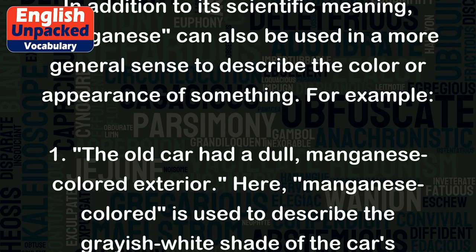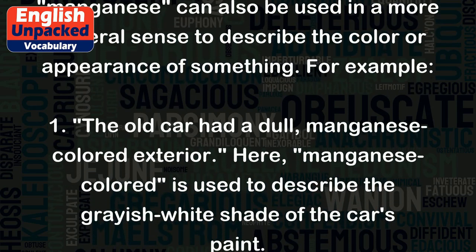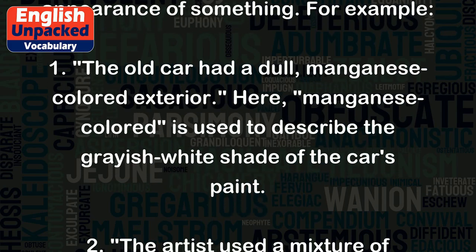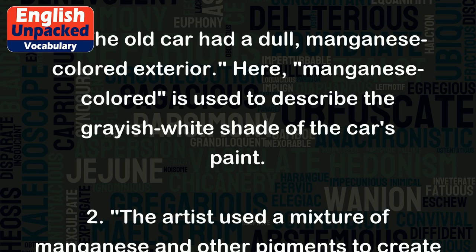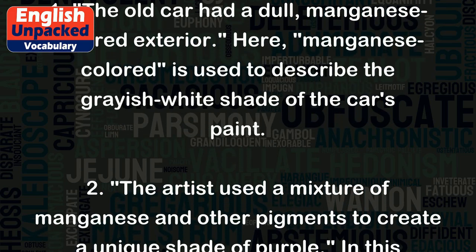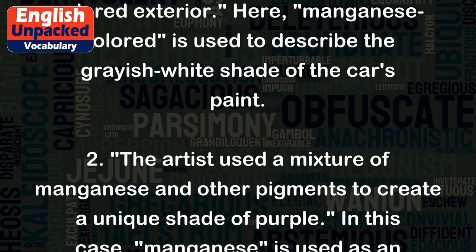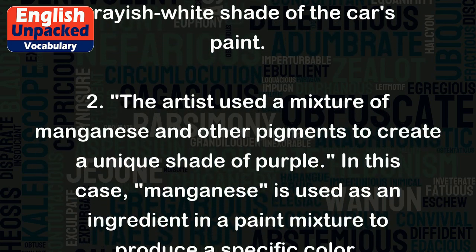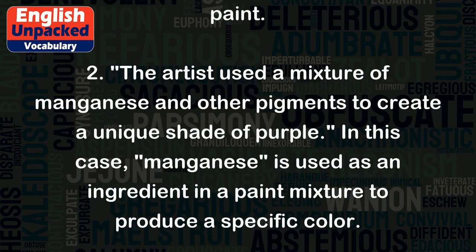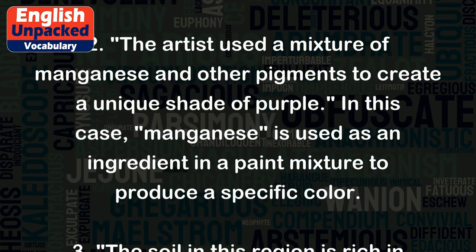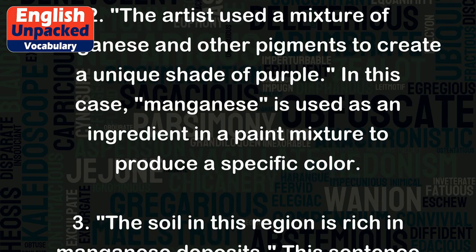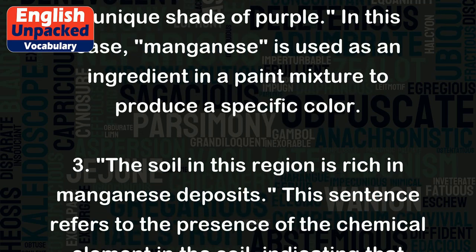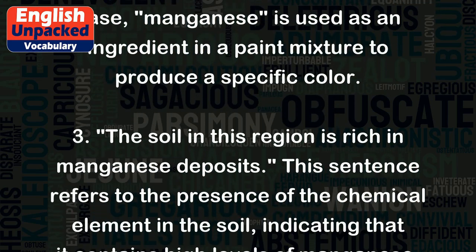For example: 1. The old car had a dull, manganese-colored exterior. Here, manganese-colored is used to describe the grayish white shade of the car's paint. 2. The artist used a mixture of manganese and other pigments to create a unique shade of purple. In this case, manganese is used as an ingredient in a paint mixture to produce a specific color.